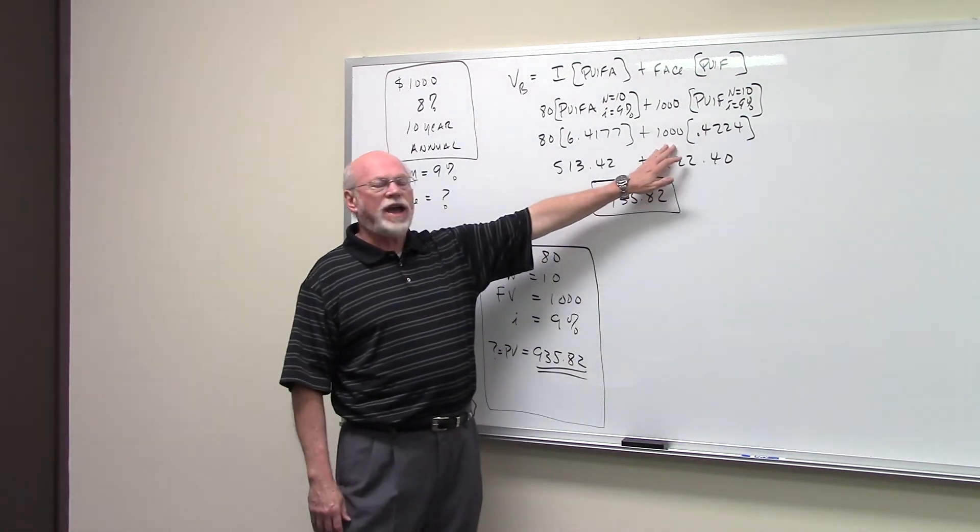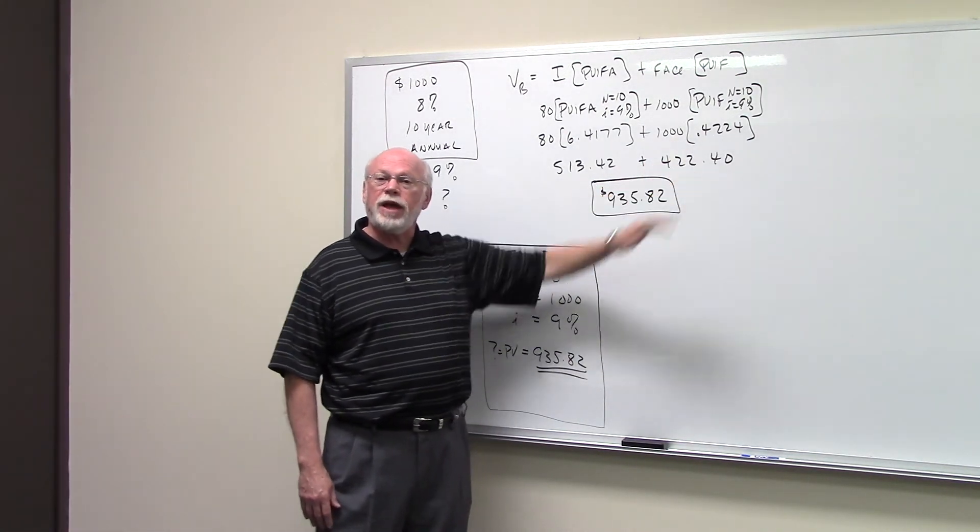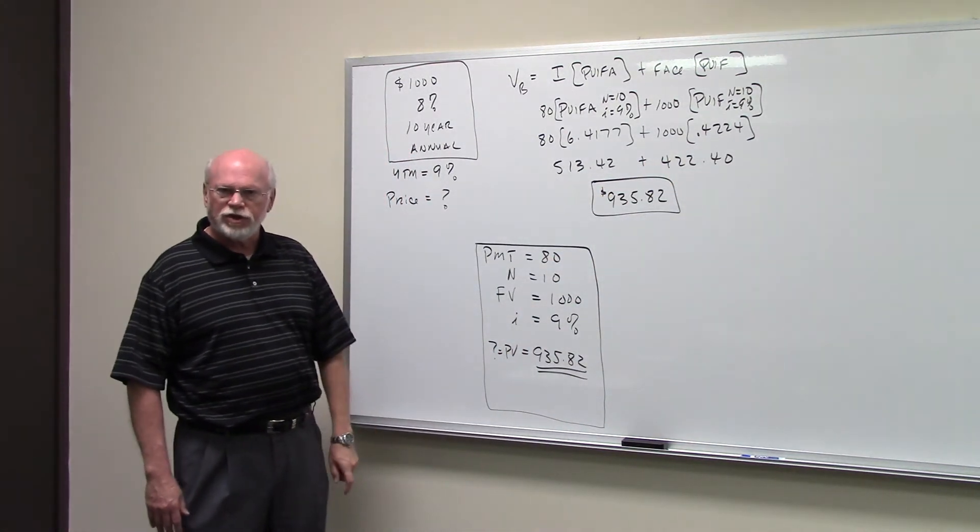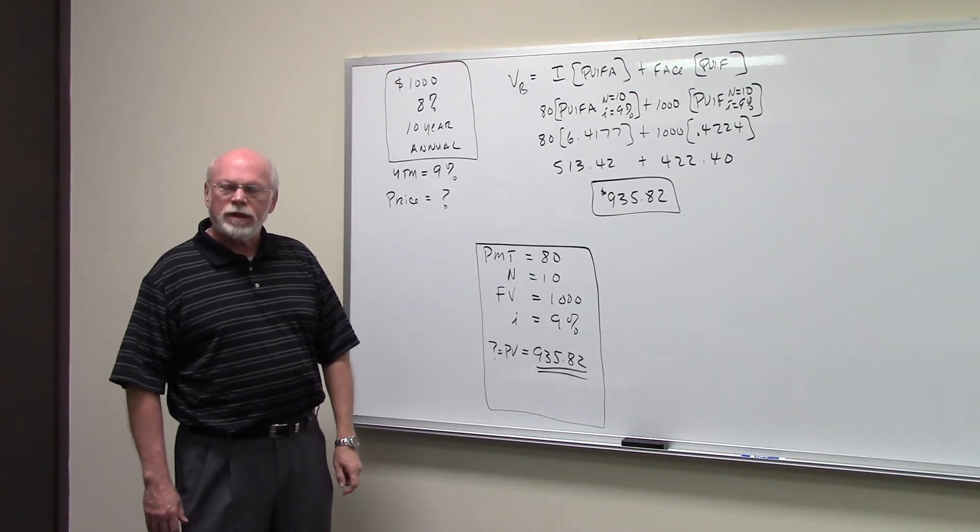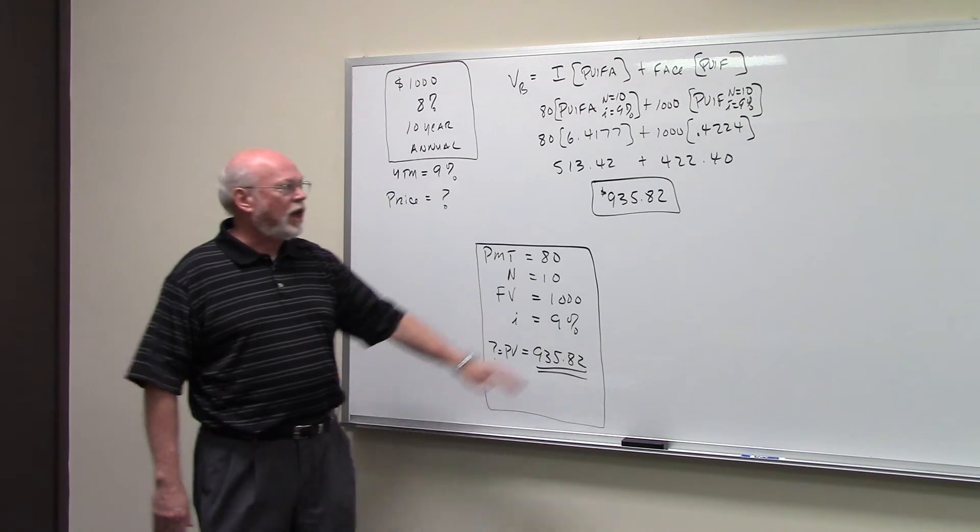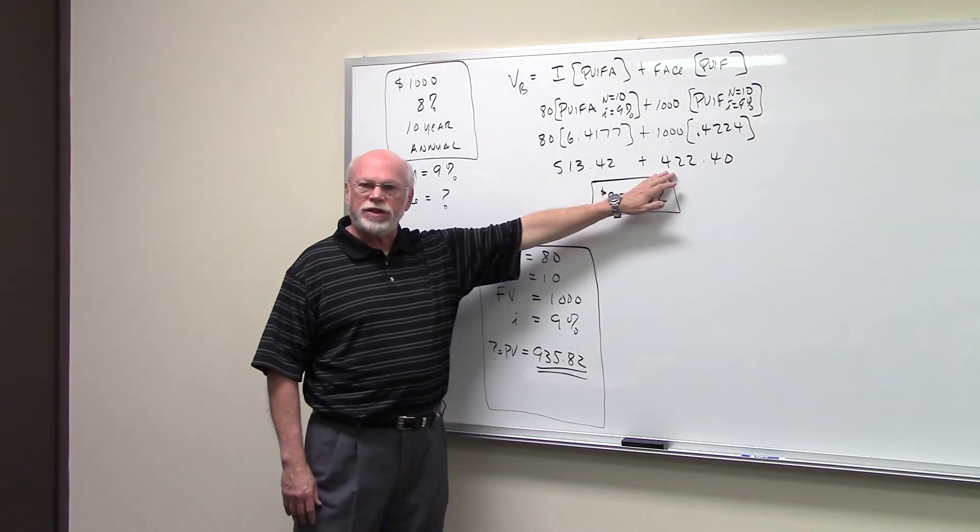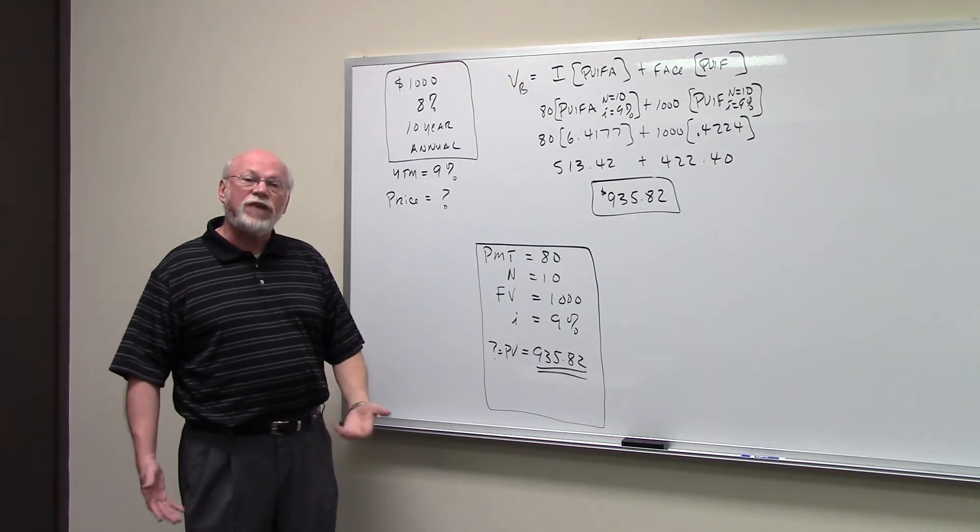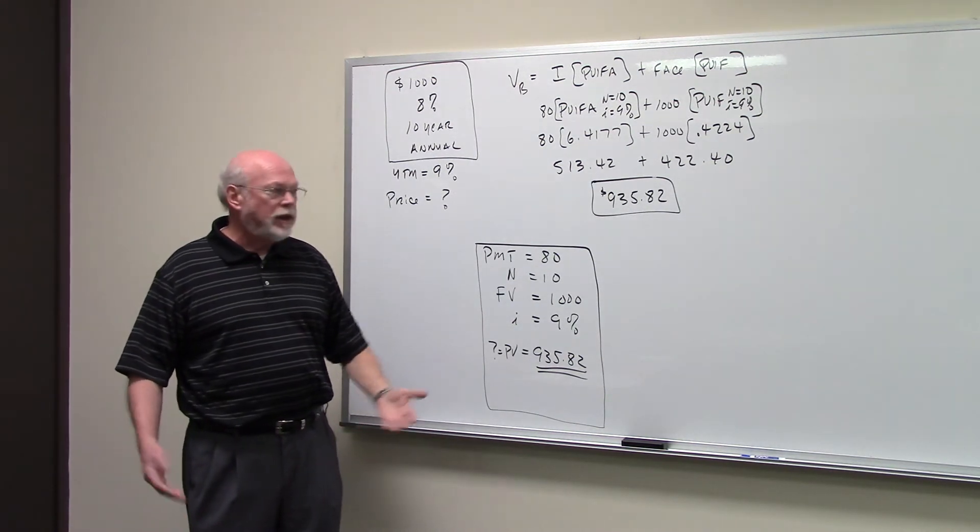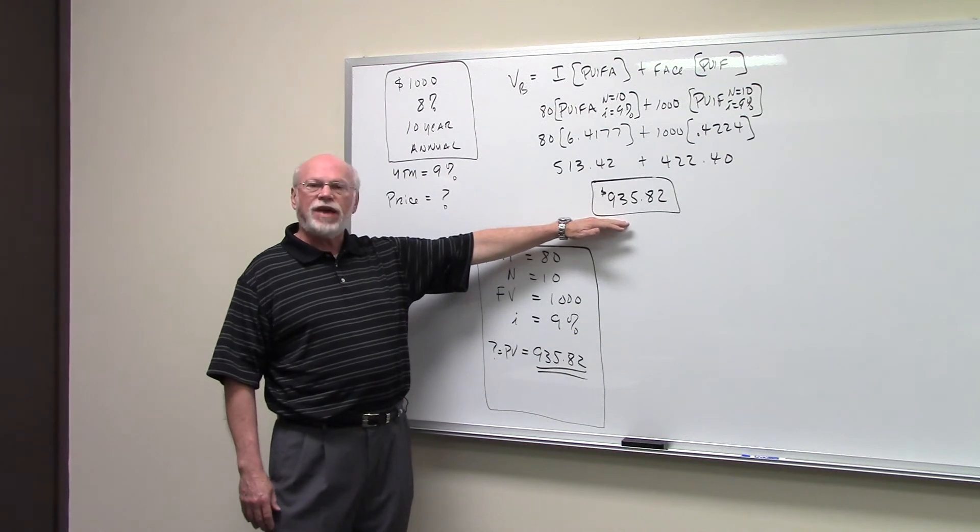To find the present value of the lump sum cash flow, you multiply it by its present value interest factor, which turns out to be 0.4224. Add these two present values up, you find the value of the bond, the price of the bond, to be $935.82.